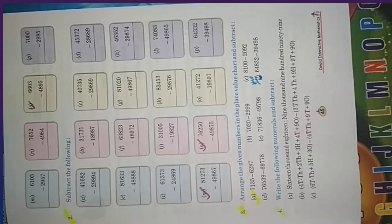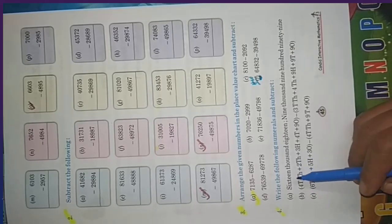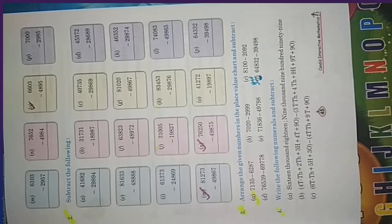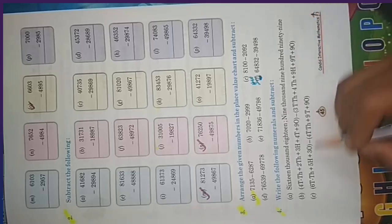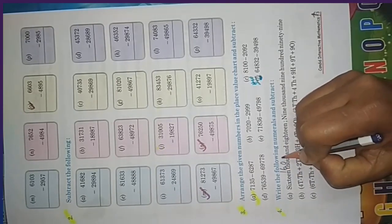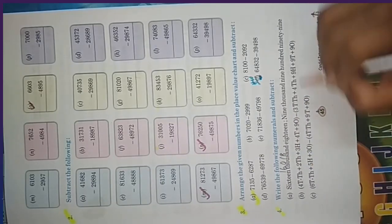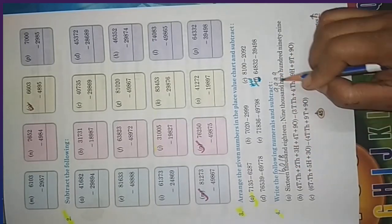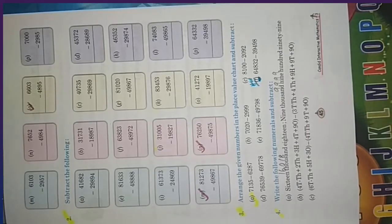Question number 4: write the following numerals and subtract. The numbers are written in word form, so you have to change them into numeral form. The first number is sixteen thousand and eighteen, which is 16018, and the next number is 9999. First change them into number form, then subtract.